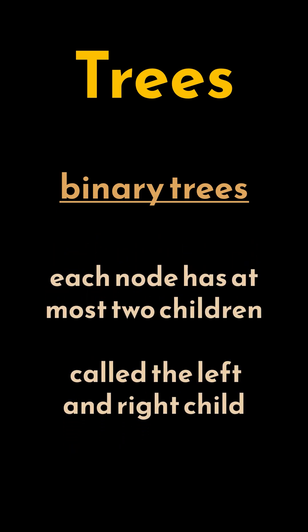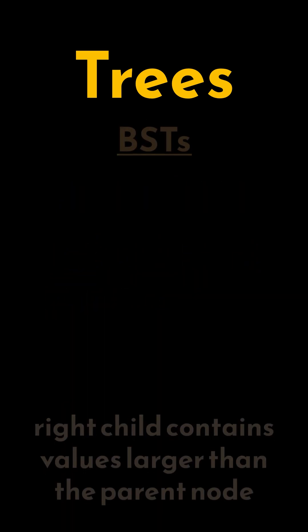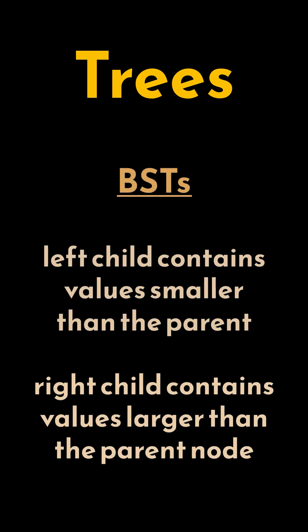In a binary tree, each node has at most two children, called the left and right child. A binary search tree is a type of binary tree where the left child contains values smaller than its parent node and the right child contains values larger than the parent.